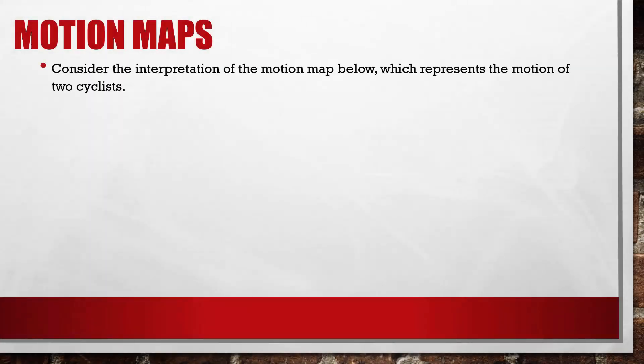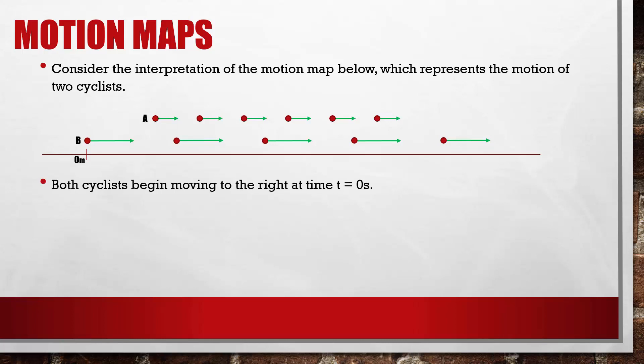Let us consider the interpretation of the motion map below, which represents the motion of two cyclists. Both cyclists begin moving to the right at time t equals 0 seconds. Cyclist B begins at the origin, and cyclist A begins at some point to the right of the origin.